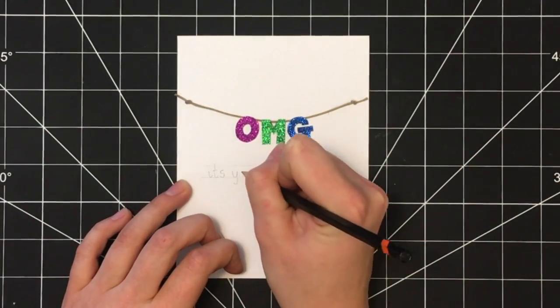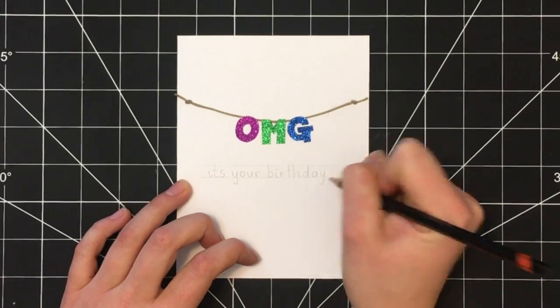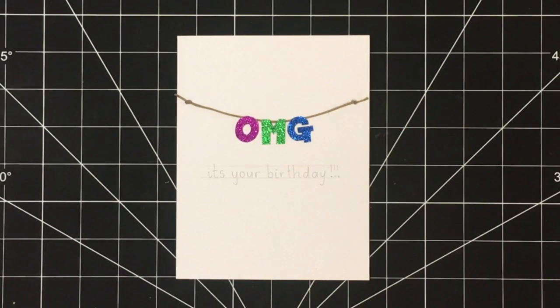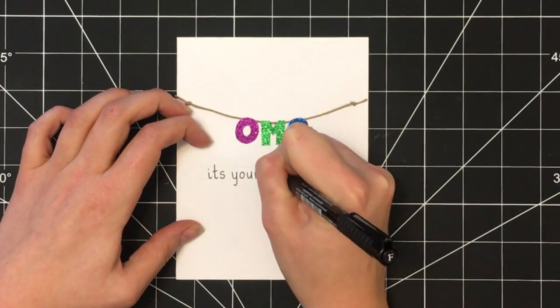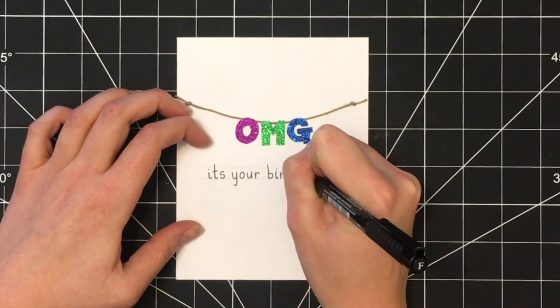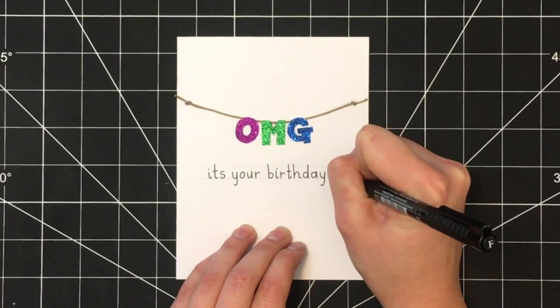Once I had my line drawn, I switched over to my pencil and I wrote in the words. Once I had the words written in pencil, I simply took a Faber-Castell pen in black and traced over the letters.